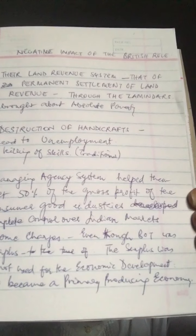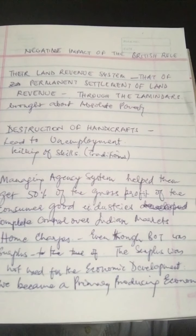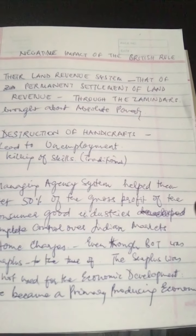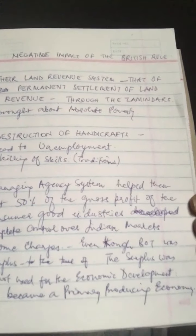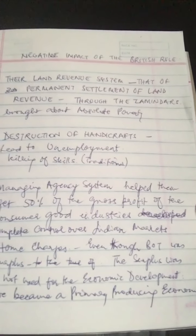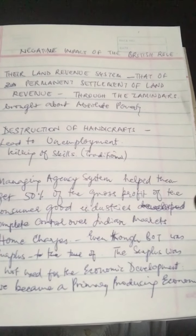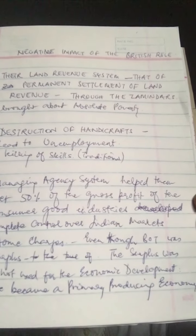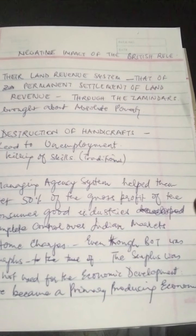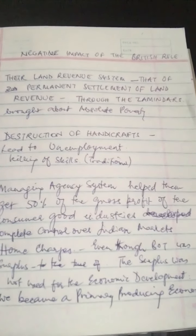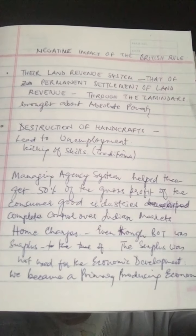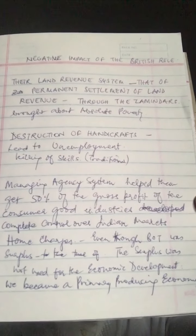The Indian economy became a primary producing economy, exporting only agricultural products and raw materials, while importing British manufactured goods. The British gained complete control over the entire Indian market through their discriminatory tariff policy. This was the overall negative impact of the British on the Indian economy.